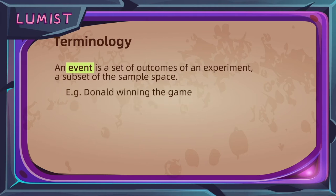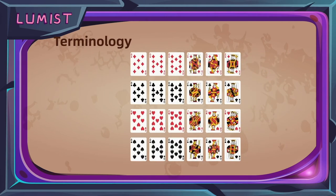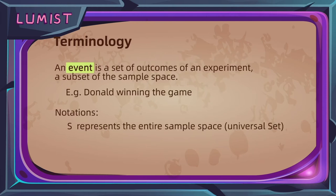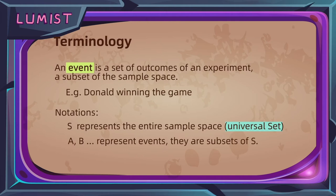For our example, an event could be Donald winning the game. We know Joe drew a seven, so the set of outcomes where Donald draws a number eight or higher correspond to the event of Donald winning. For notation, we use the letter S to represent the entire sample space, sometimes also called the universal set. We use letters like A and B to represent events, which are subsets of the sample space.